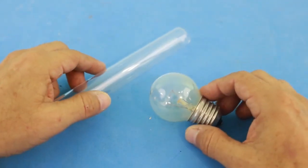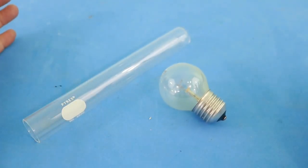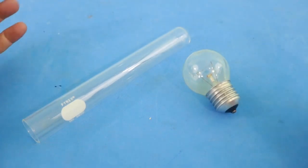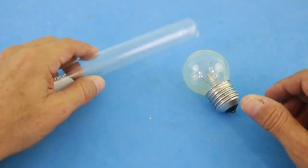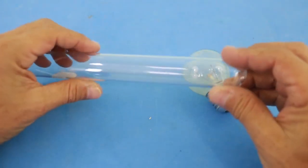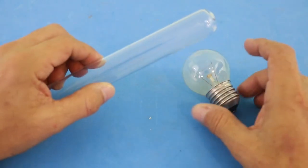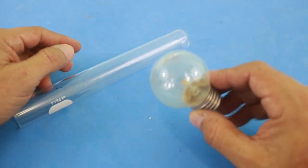It can be surprising to talk about electrical conduction in glass because normally we consider glass as an insulator. In fact, glass is used in many applications as an electrical insulator.